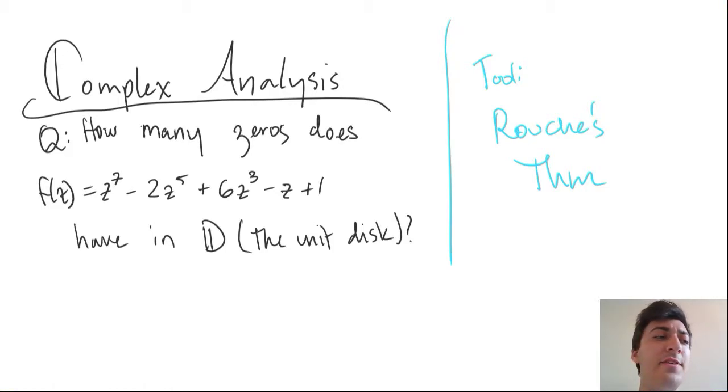Now off the top of your head, this might be a pretty hard problem to solve, because unless you know, for example, what a factor of this polynomial might be, you don't really get closer to where all seven zeros might be. And then maybe you have a sophisticated computer program at your disposal, but maybe you don't.